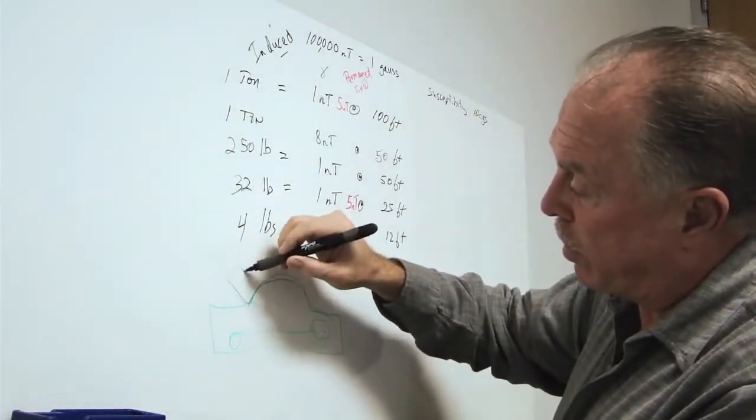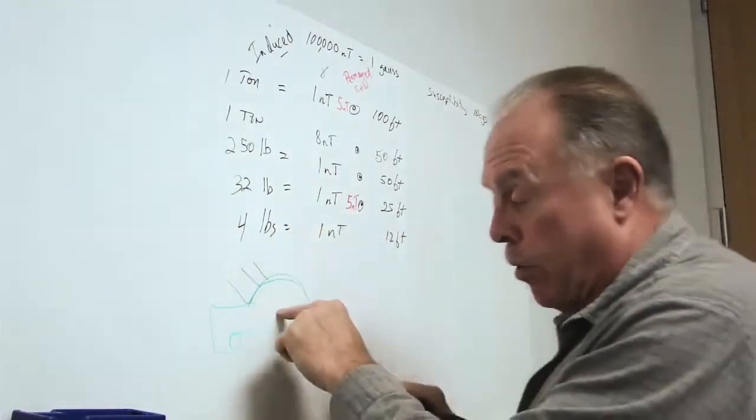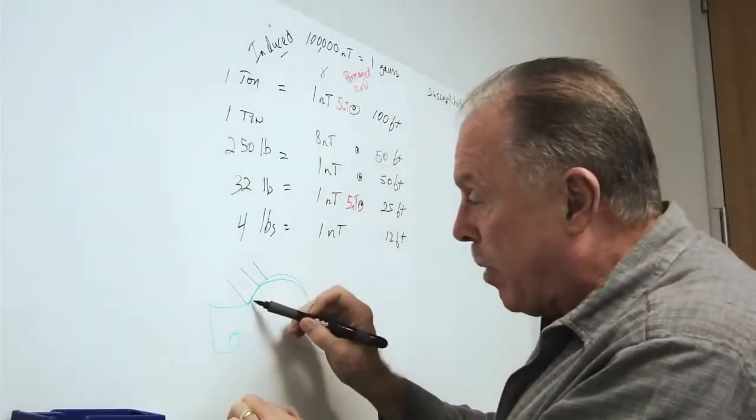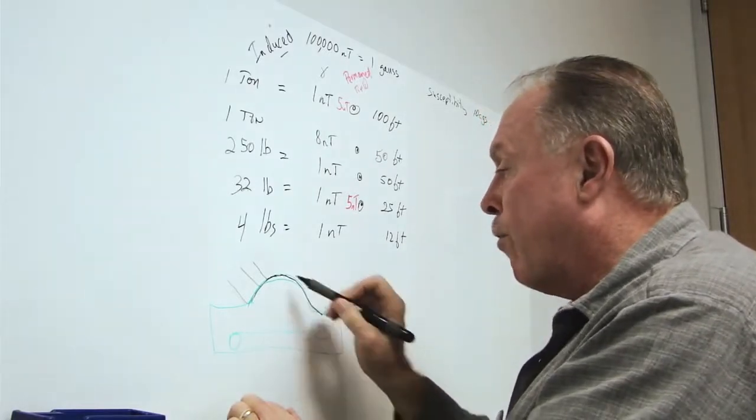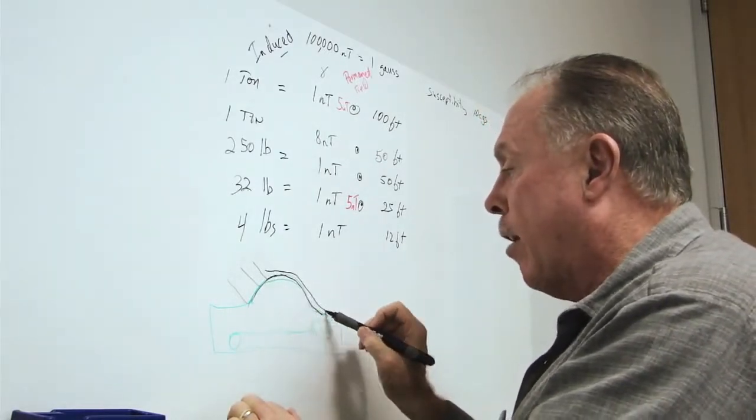So the Earth's magnetic field wants to come and go inside, but it can't because of the steel covering. And so the Earth's magnetic field tends to flow around the outside of the car.